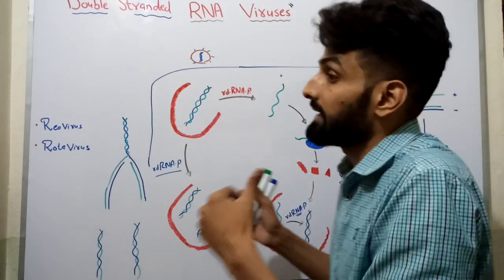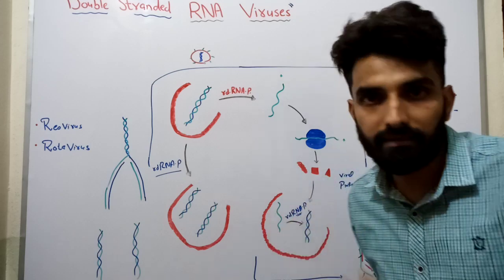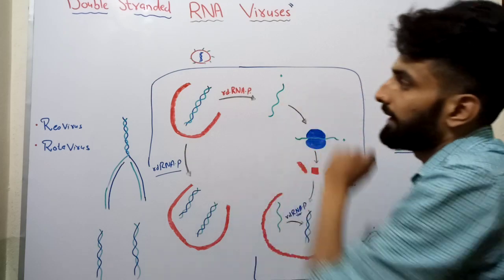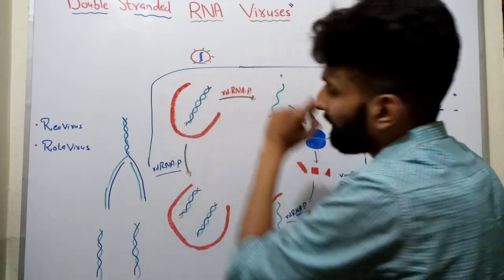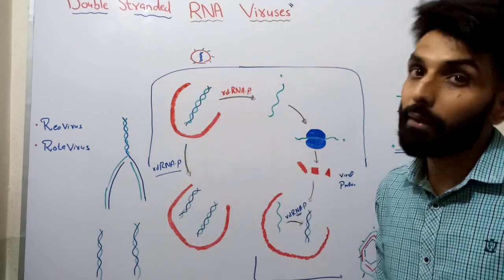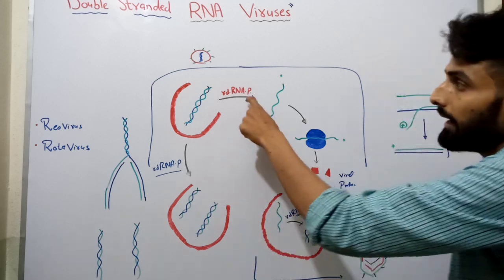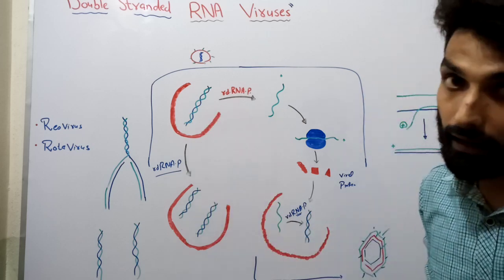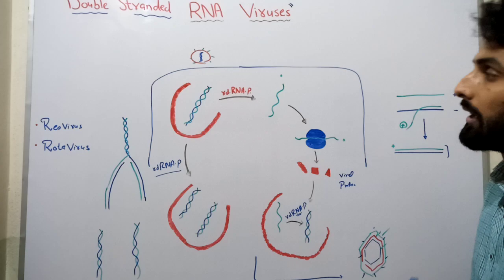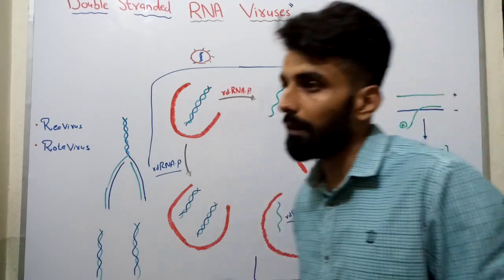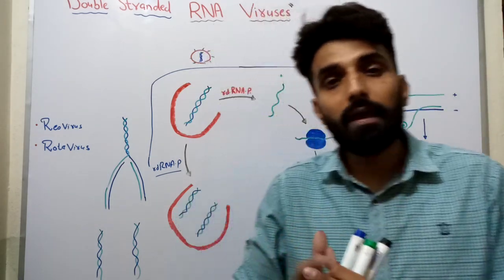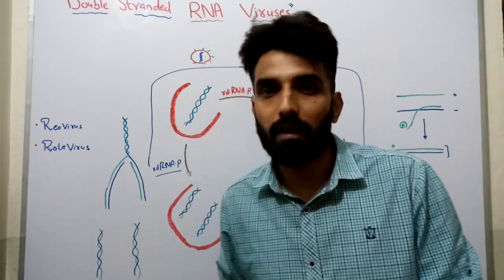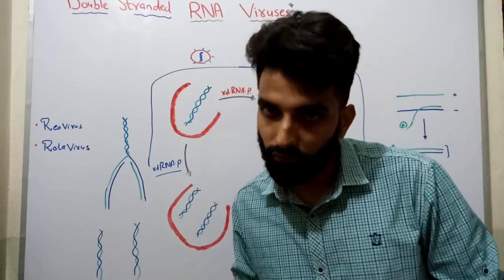So the virus has to stay inside the capsid throughout the replicating cycle to remain intact from the host cell's antiviral mechanism. This means that along with the double-stranded RNA, the nucleocapsid of the virus will also remain intact. The RNA-dependent RNA polymerase will also come along with the nucleocapsid, and this polymerase will have both transcriptase activity and replicase activity.